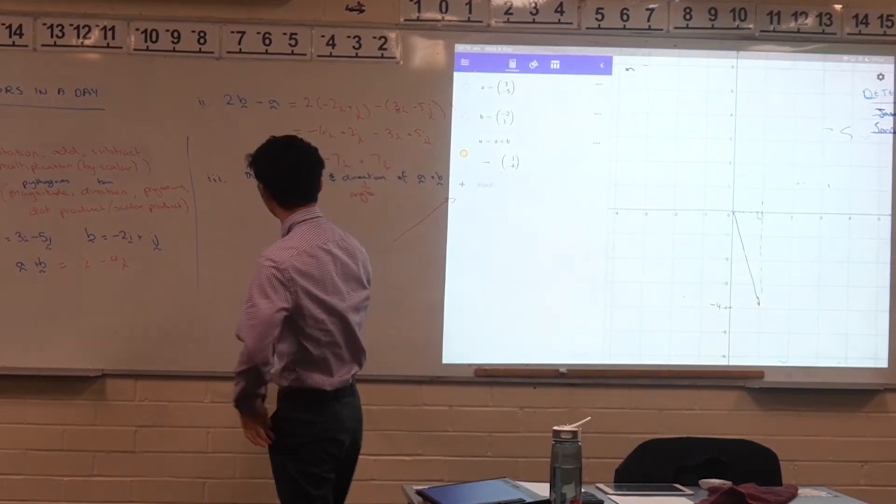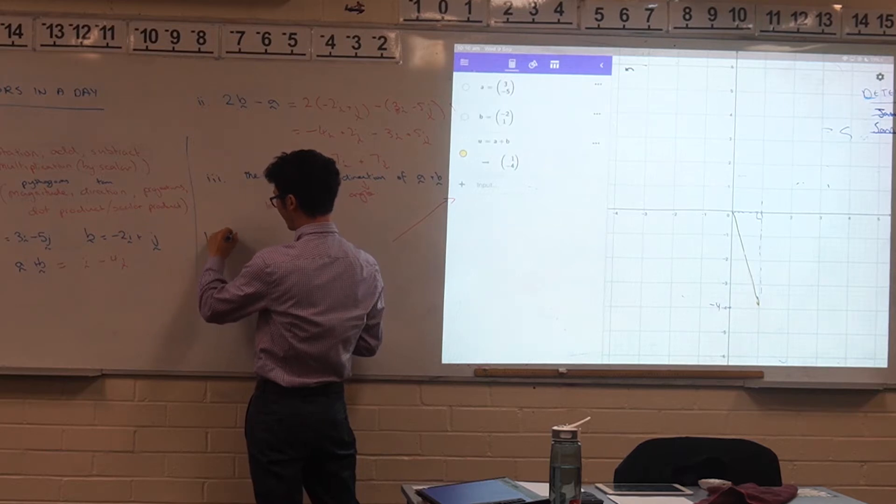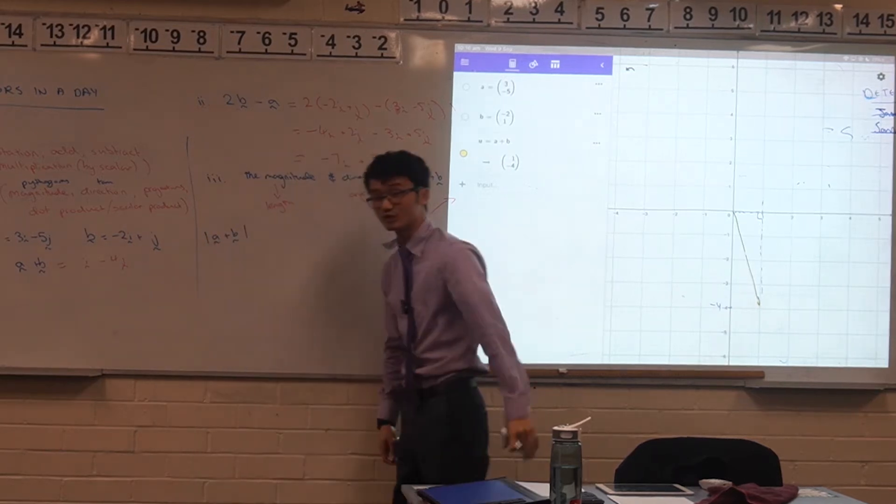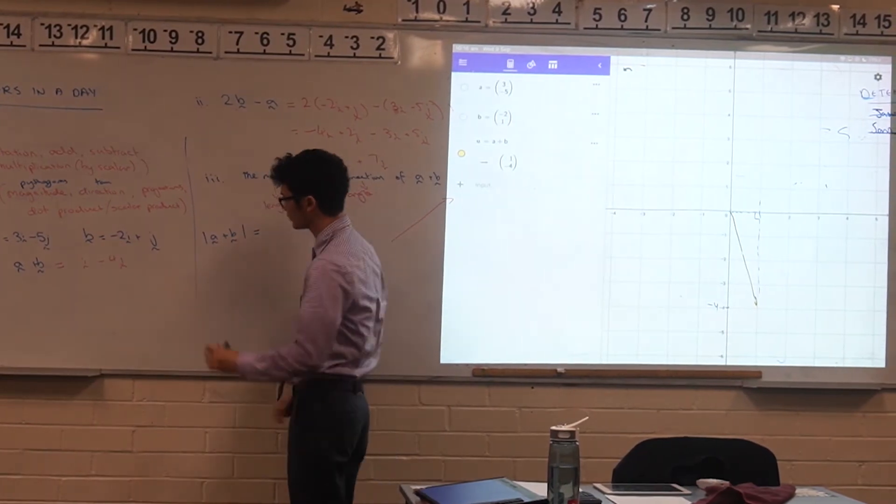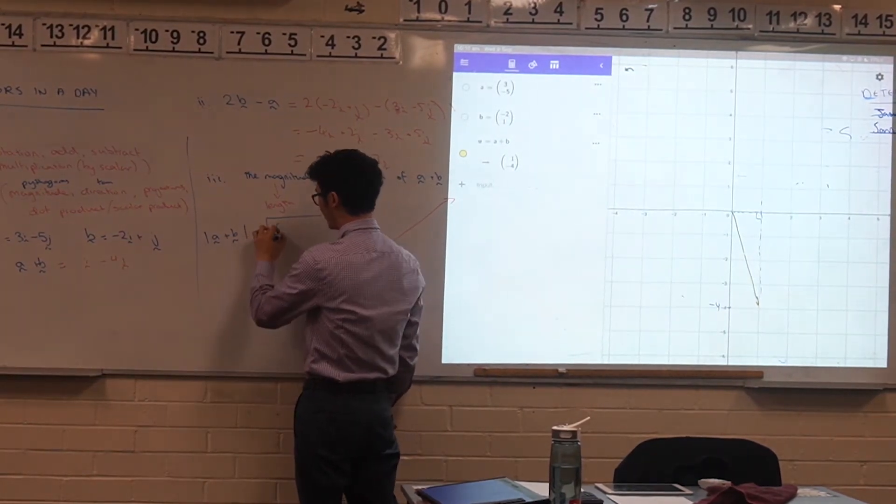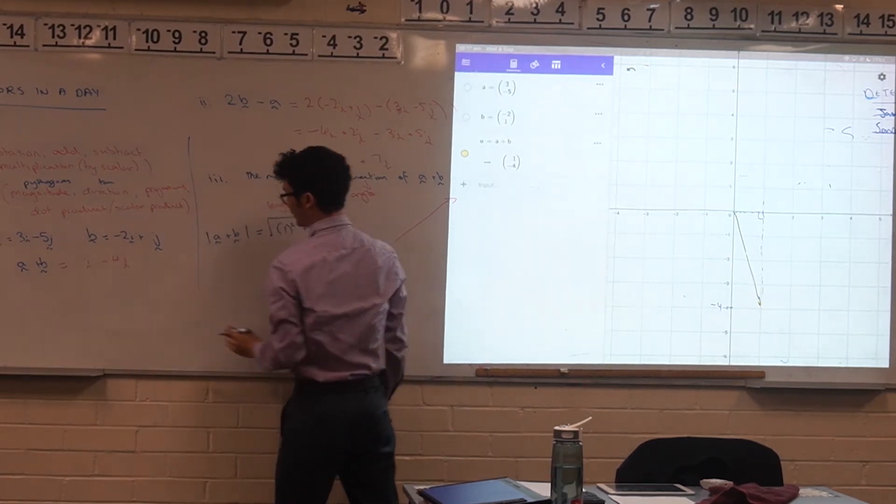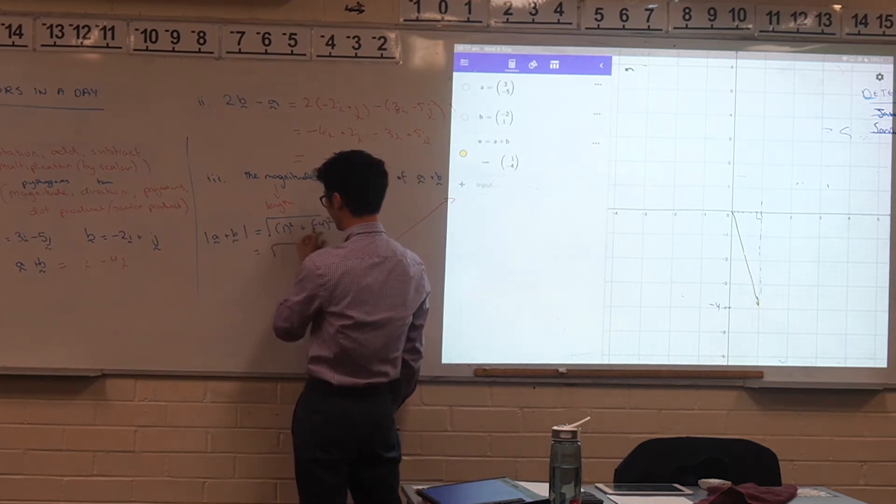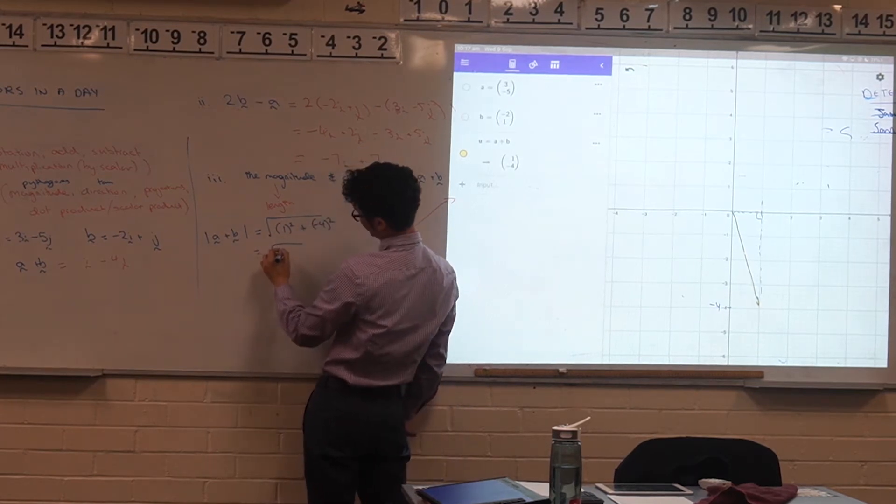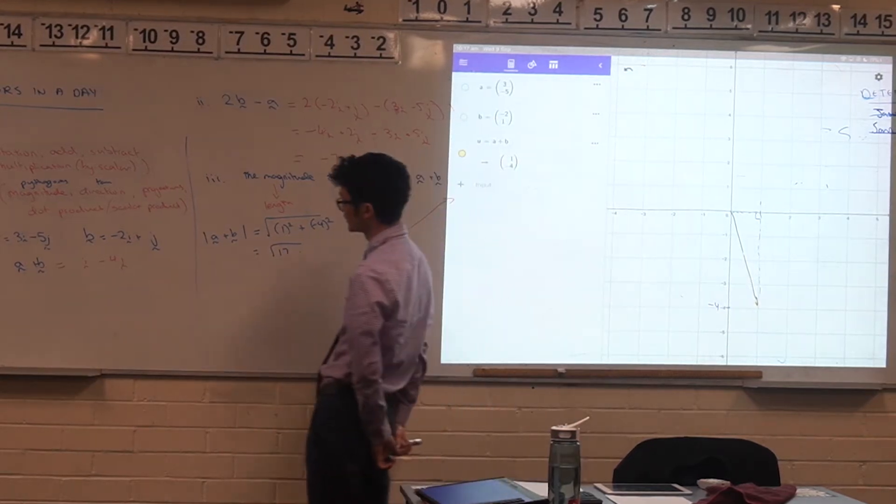So for the magnitude, what I'm going to do, and the way in which you write that, we use these absolute value symbols, because the absolute value and magnitude are very closely related. The magnitude of a plus b, that's going to be the square root of the horizontal component, so 1 squared, plus the vertical component, negative 4 all squared, and so that's going to be square root of 17 by the looks of it. So that's the magnitude.